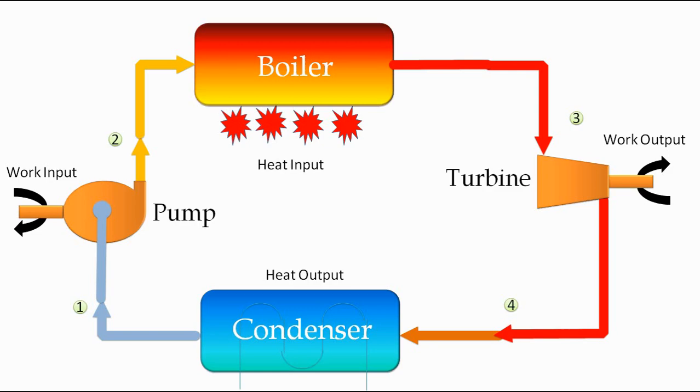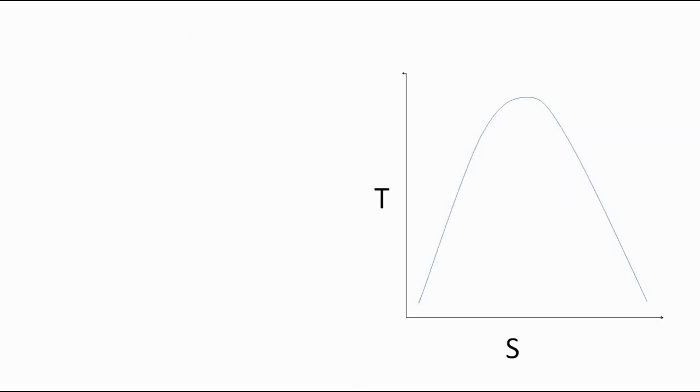So this is how the Rankine cycle works. Now we will move on to the next slide and see the TS diagram, and we will see about work input given and work output obtained. As you can see, this is the TS diagram and the blue line which you can see is the saturated liquid line.